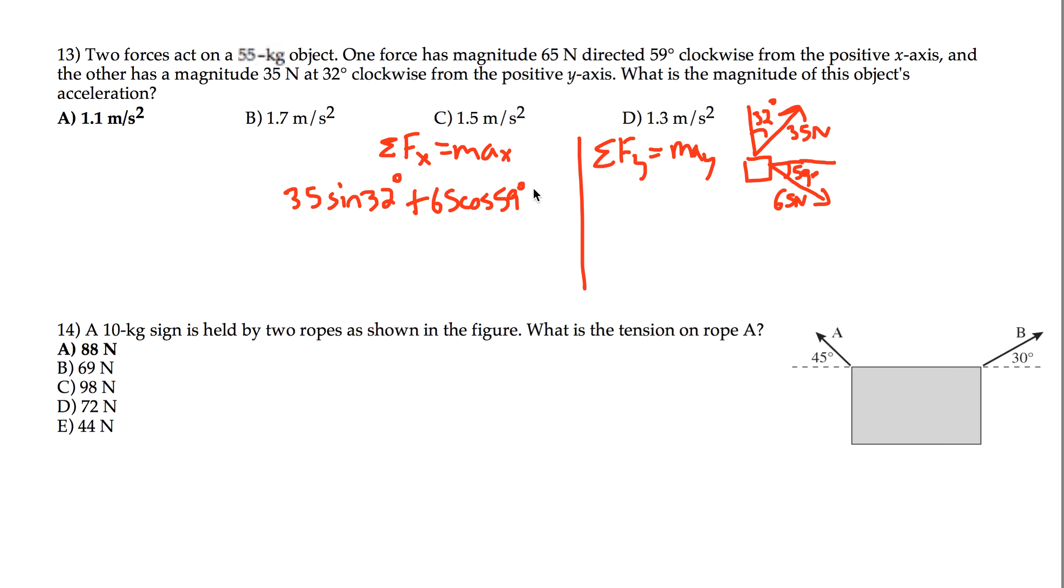Those are the only two forces in the x-direction. That was a typo here, that should equal max. So we can divide all of this by the mass to get ax by itself. So ax is equal to all of this. You can get a number out.